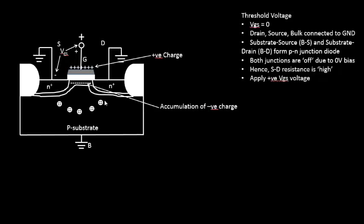This gate oxide led to the formation of a parallel plate capacitor. We were trying to learn the threshold voltage — the voltage at which the device turns on. Initially, we tied the source, drain, and body terminal to ground and applied a positive potential to the gate terminal. The positively charged gate plate acts like a magnet, repelling holes from the P-type substrate, which are its majority carriers, and the area gets depleted — behaving like a classic PN junction diode.